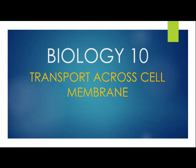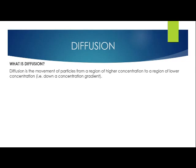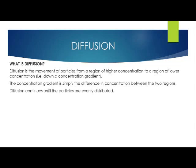The first type of transport we'll be looking at is diffusion. What is diffusion? Diffusion is the movement of particles from a region of higher concentration to a region of lower concentration — that is, down a concentration gradient. The concentration gradient is simply the difference in concentration between the two regions. It should be noted that diffusion continues until the particles are evenly distributed throughout the region.